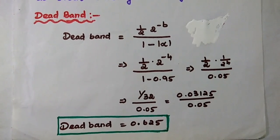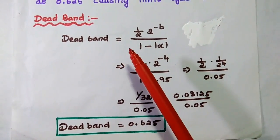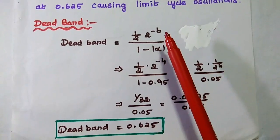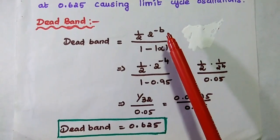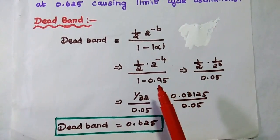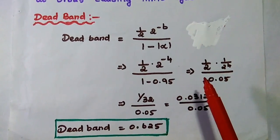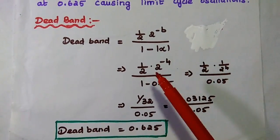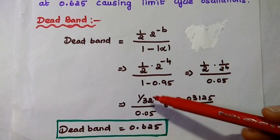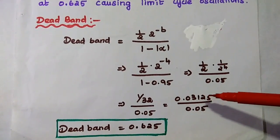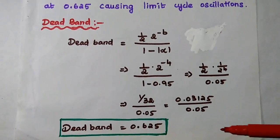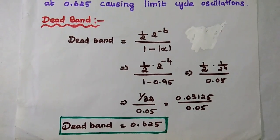Next we find the dead band for this system. The formula for dead band is (1/2)·(2^(−b))/(1−alpha). Here b is the number of bits used to represent the output value, which is 4, and alpha is the filter coefficient 0.95. Substituting: (1/2)·(2^(−4))/(1−0.95) = (1/2)·(1/16)/0.05 = (1/32)/0.05 = 0.03125/0.05 = 0.625. So the dead band range for this system is 0.625.